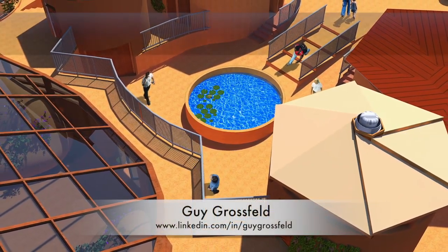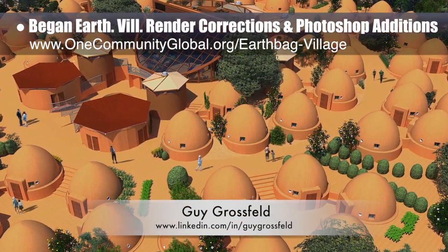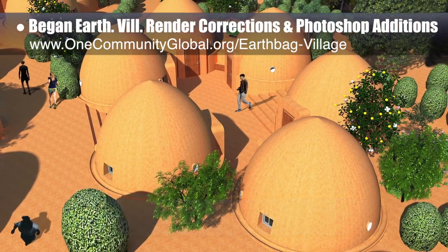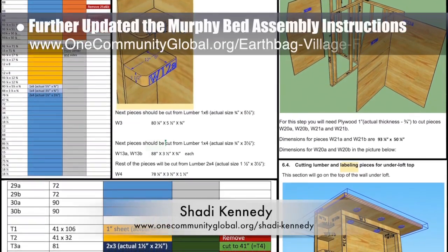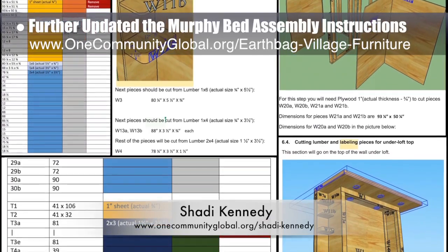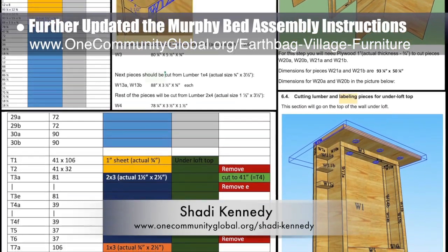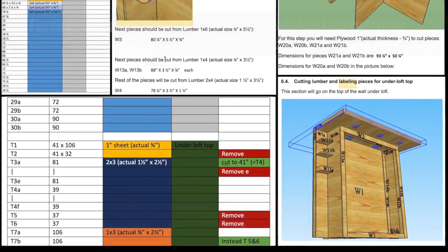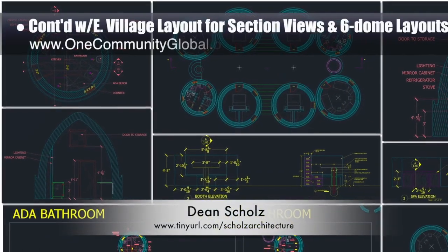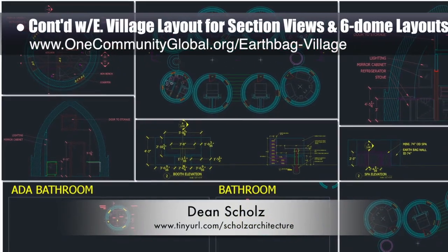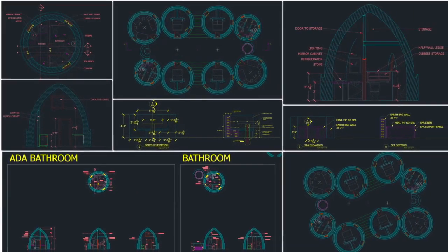Guy Grosfeld, graphic designer, rejoined the team and started helping with render corrections and Photoshop additions for the earthbag village. This week, Guy completed his part helping with the three renders shown here. Shawty Kennedy, artist and graphic designer, completed his 29th week leading the development of the Murphy bed instructions — creating a detailed list of the wall section parts and scouting potential build issues throughout the existing materials list and assembly instructions. Dean Schulz, architectural designer, also continued working on the earthbag village. His focus this week was continued development of the section views and six-dome layouts.